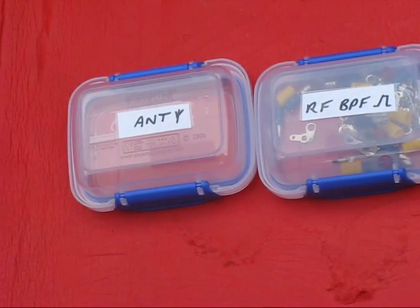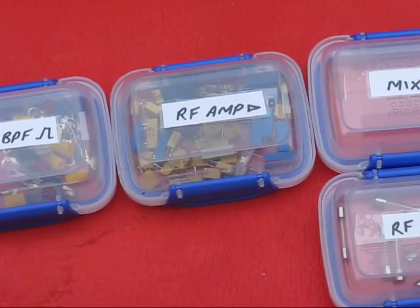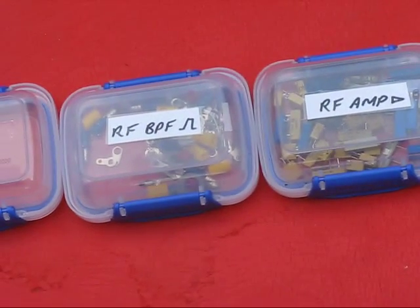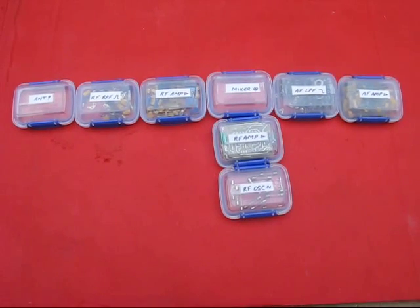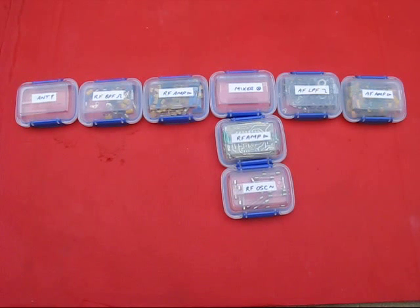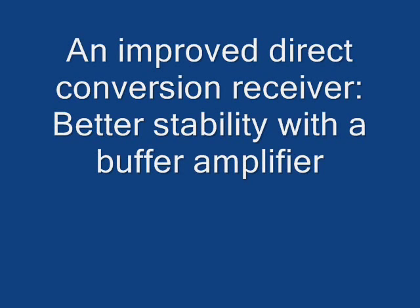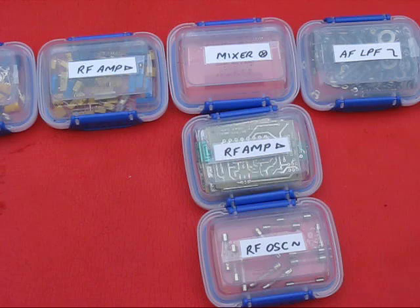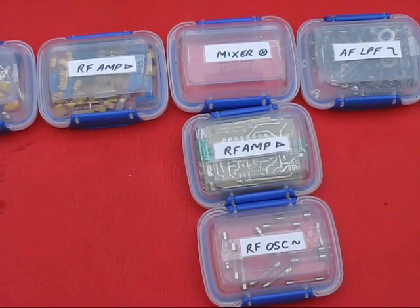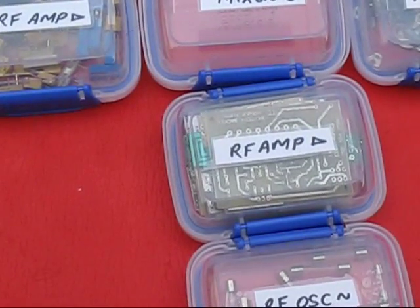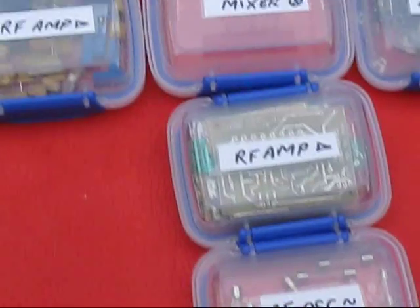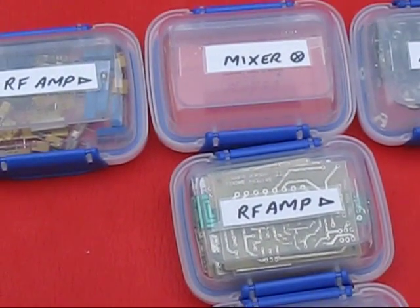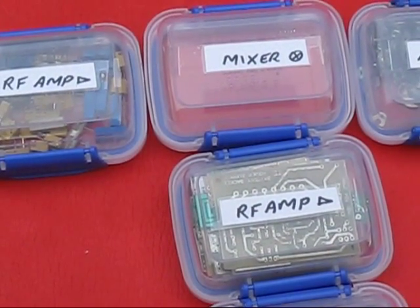To improve the receiver's sensitivity, I've added another stage — an RF amplifier. That provides isolation, isolating the RF oscillator from the mixer, which makes the receiver more stable.